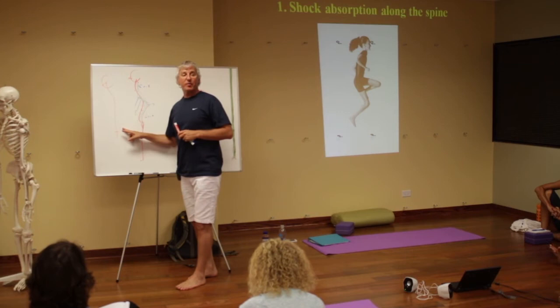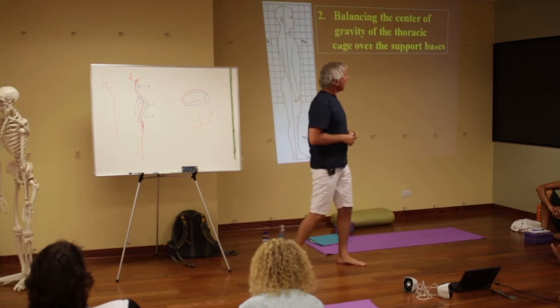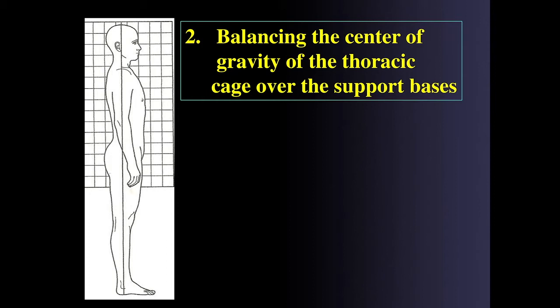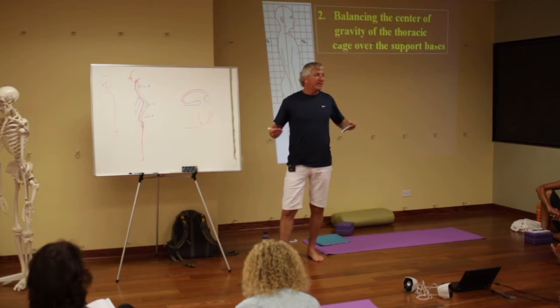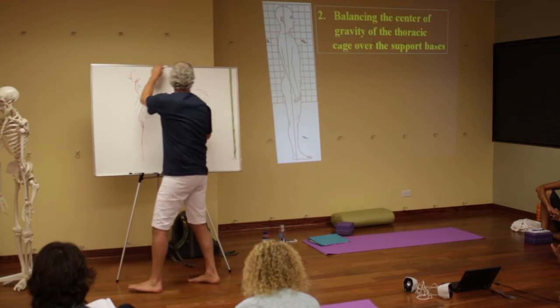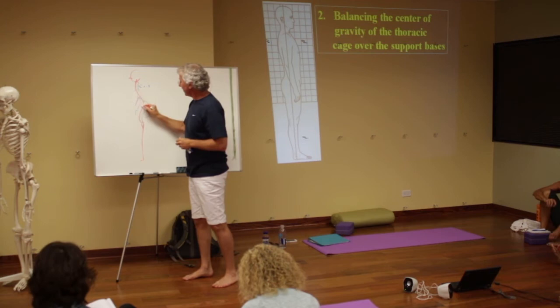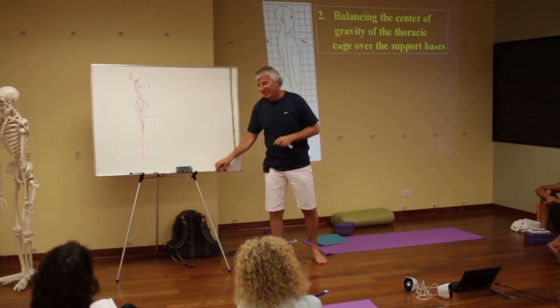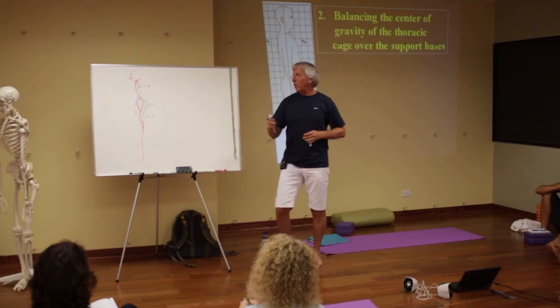The second advantage is balancing the center of gravity over the support base, which allows efficient standing. Why is it more efficient? Why is it easier to stand like this? The thoracic spine T1 to T12 is connected to the rib cage, and inside the rib cage there are lots of organs — heart, lungs, nervous system, blood system. All of this is quite heavy and has a center of gravity, and this center of gravity needs to fall within the borders of the feet.